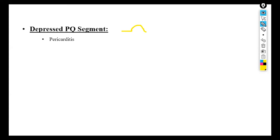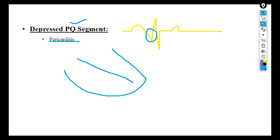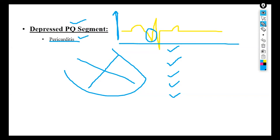The next finding is depressed PQ segment. When we see P and Q with the Q segment depressed, this is because of pericarditis — inflammation of the pericardium of the heart. Inflammation causes leakage of fluid and release of inflammatory substances, making the pericardium hardened and stiff. The current was already moving toward the negative lead of the ECG electrode, giving a natural negative depression. With inflammation and fluid leakage, this deepens further, so pericarditis causes depression of the PQ segment.